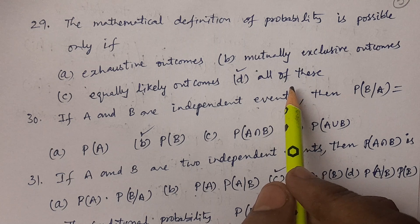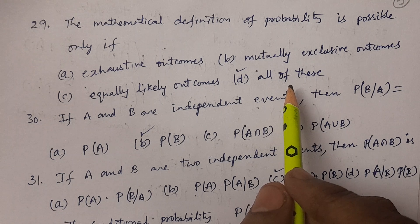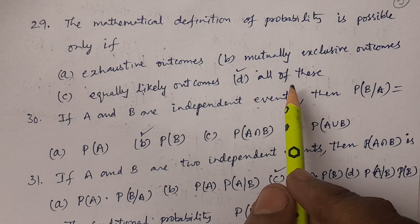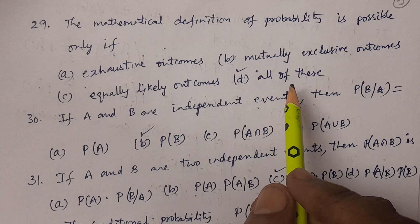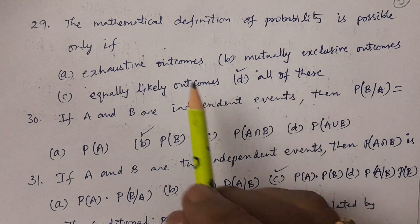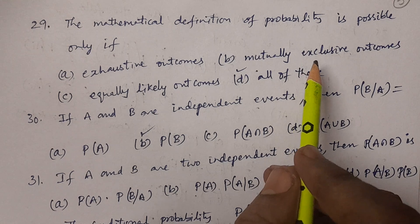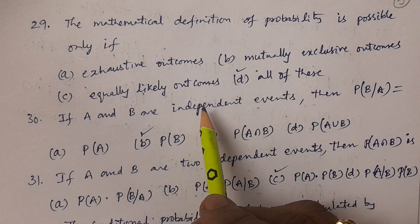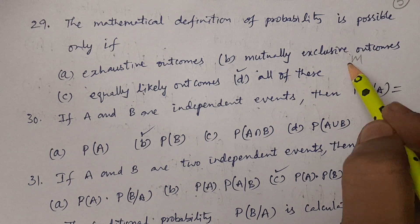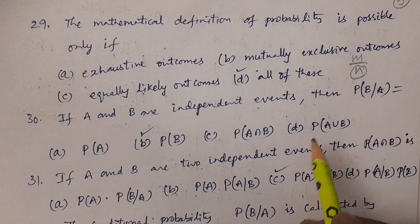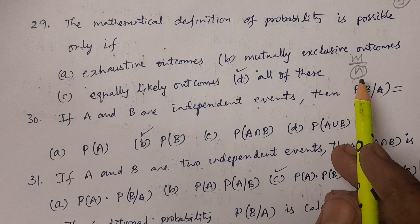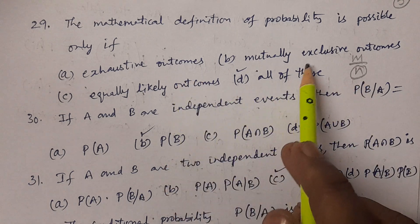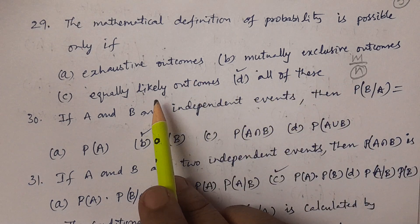The answer is all of these. To define the mathematical definition of probability, the total possible number of outcomes N must be exhaustive, mutually exclusive, and equally likely. In the formula M by N, N should satisfy all three conditions — therefore, all of these.